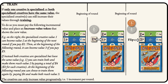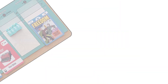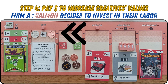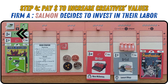If only one creative is specialized, or both specialized creatives have the same value, the specialized creative can still increase their value through training by paying the incremental value and placing an increased value token. For example, a specialized value one creative can become value two if you pay two dollars, then value three if you pay three dollars. If both creatives are specialized with the same value, you can train both to reach value two by paying four dollars total, then value three by paying six dollars. Firm B — Teal — decides not to invest in their labor.